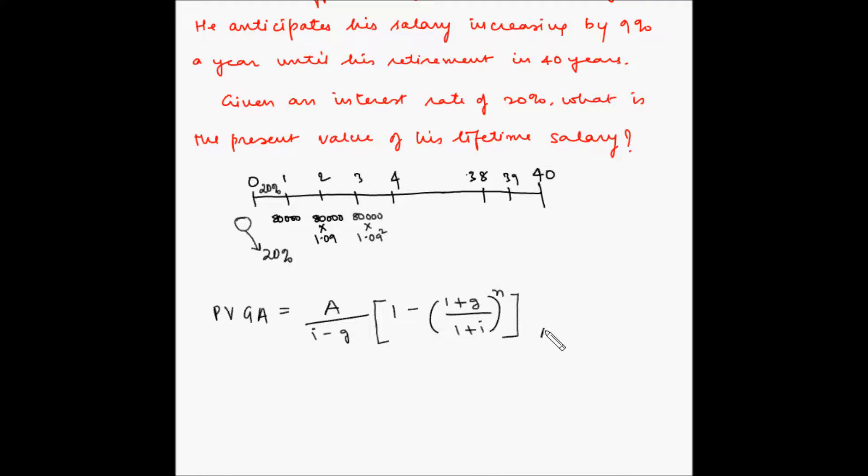Now here A is the initial or the first year's payment amount, which in our case is 80,000. i is the rate of interest per period, which in our case is 20%, however for the calculation in the formula i will be 20 divided by 100, which is equal to 0.2. g is the growth rate, which is 9% or 0.09, and n is the number of compounding periods, which in our case is 40.